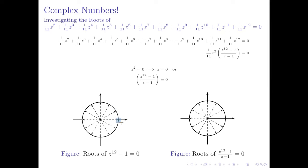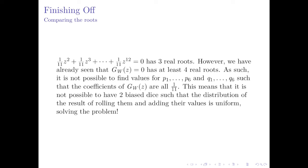We can see there are two real roots among the 12th roots of unity: z = 1 and z = −1. But looking at the roots of (z¹² − 1)/(z − 1) = 0, dividing by (z − 1) removes the z = 1 root. So we've lost one of our real roots and are left with only z = −1. This means the expression (1/11)z² + (1/11)z³ + ... + (1/11)z¹² = 0 has only three real roots. However, we already established that g_w(z) = 0 must have at least four real roots. As such, it is not possible to find values p1 through p6 and q1 through q6 such that the coefficients of g_w(z) are all 1/11. This means it is impossible to have two biased dice such that the distribution of their sum is uniform, solving our original problem.